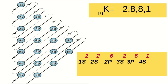We can write the electronic configuration of potassium using this figure. Atomic number 19, electronic configuration 2-8-8-1. Subshell electronic configuration: 1S2, 2S2, 2P6, 3S2, 3P6, 4S1.